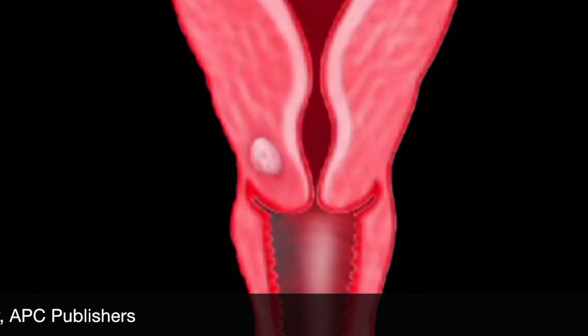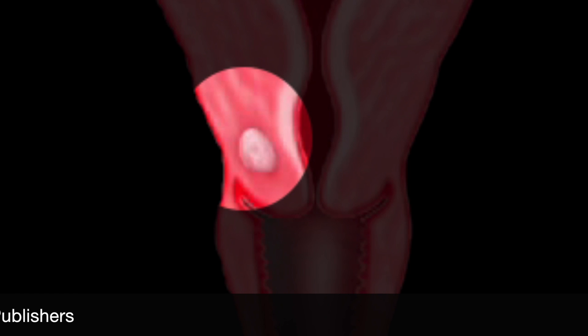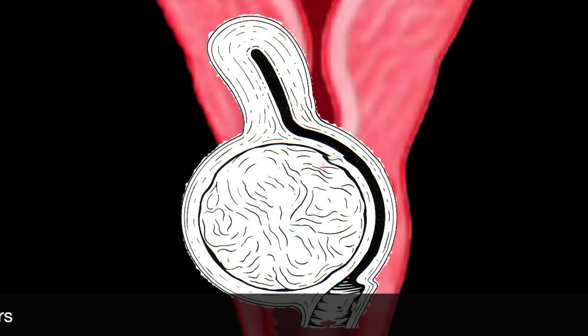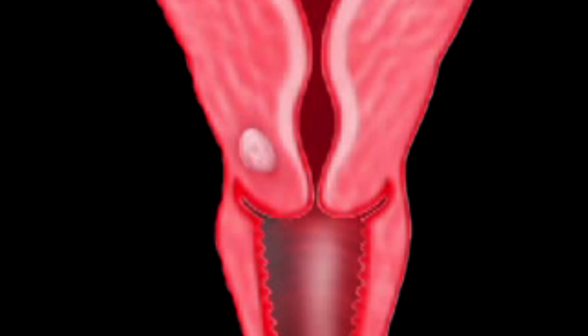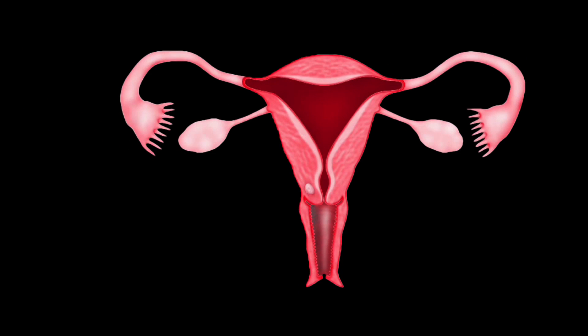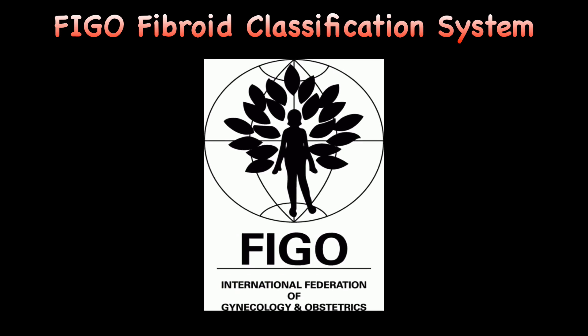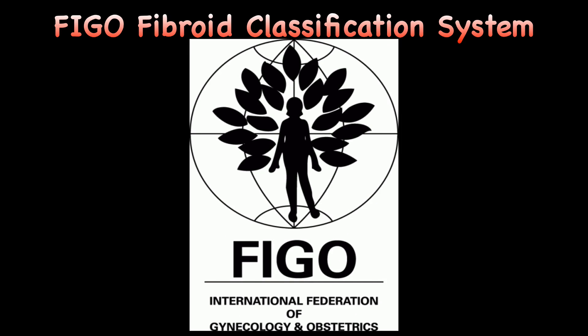This is a pedunculated fibroid arising from the cervical canal. A fibroid arising in the cervix is called a cervical fibroid. It can grow in the anterior lip of the cervix or in the posterior lip of the cervix, or very rarely it can be central when it grows around the cervical canal. The International Federation of Gynecology and Obstetrics has proposed a new classification of fibroids that categorizes submucous, intramural, subserosal, and transparietal fibroids.